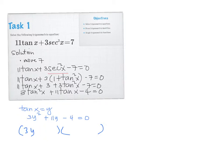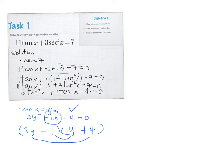Put Y first so you can see: 3Y times Y gives 3Y squared. For the constant, we try combinations: negative 1 and positive 4, so negative 1 times 4 is negative 4. Checking: you get negative Y and 12Y, which gives 11Y. That's correct.